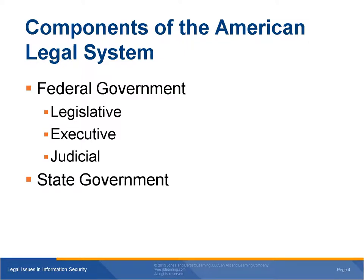State governments existed before the federal government as we know it today. Like the federal government, most states are organized under a constitution. State constitutions may vary widely from the U.S. Constitution. Although the federal constitution primarily describes the relationship between the federal government and the states, state constitutions primarily describe the relationship between a state and its citizens. For this reason, state constitutions often list many more individual rights than are listed in the federal constitution. State constitutions also tend to be longer than the federal constitution, and are generally easier to change.